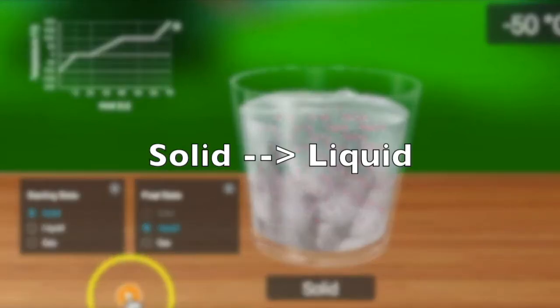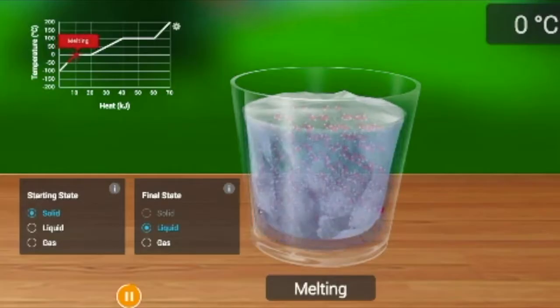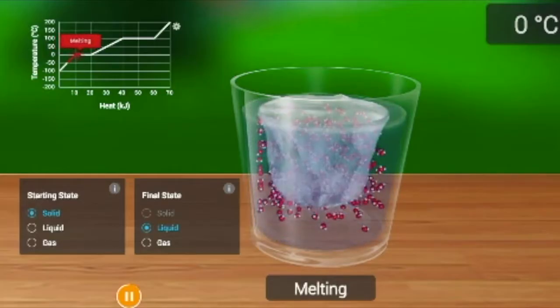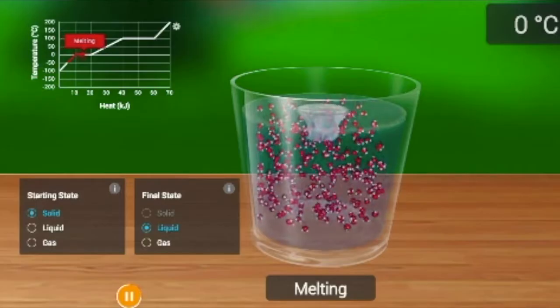Starting with solid, going to liquid. This is called melting. Melting is when a solid substance changes or melts into a liquid. The temperature at which a substance melts is called its melting point. It's also known as its freezing point.